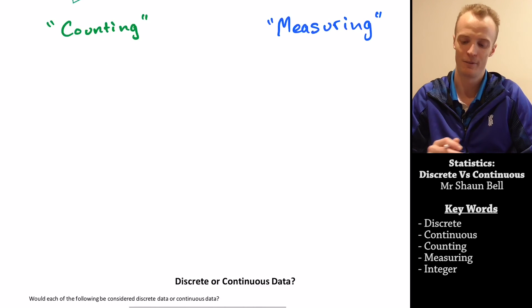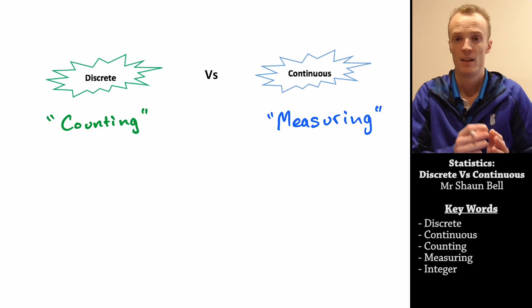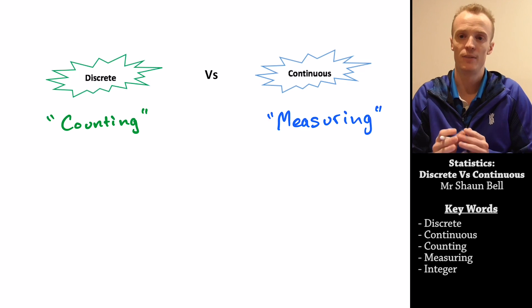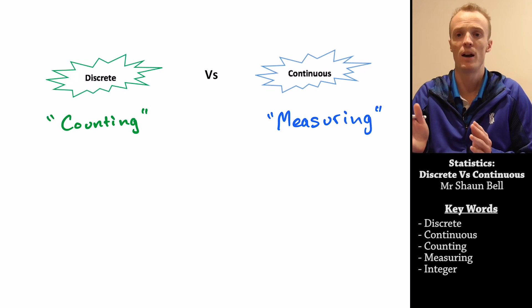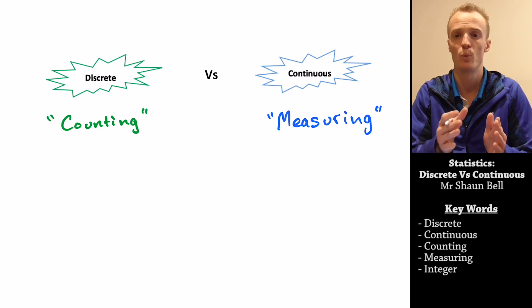So to finish, let's quickly recap. Discrete data is data that you count, where continuous data is data that you measure. Now discrete data only lives on the integers, or the whole numbers of the number line. Where continuous data can live anywhere on that number line, anywhere between those integers.